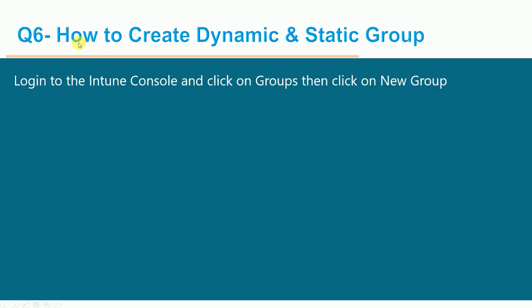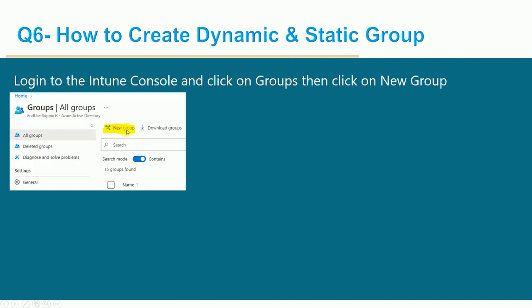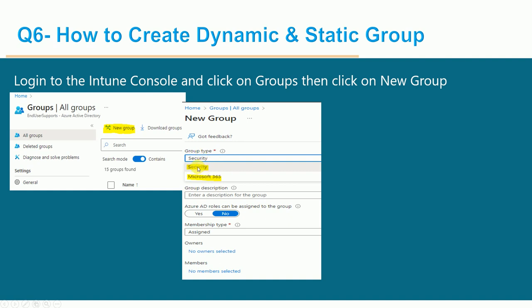How to create dynamic and static groups: log in to the Intune console and click on Groups. You will see a Groups tab. Click New Group and you will have two options: Security and Microsoft 365. For day-to-day work we use Security groups. For email configuration, use Microsoft 365. Once selected, choose Assigned for direct membership of devices or users, or choose Dynamic if you want dynamic membership.